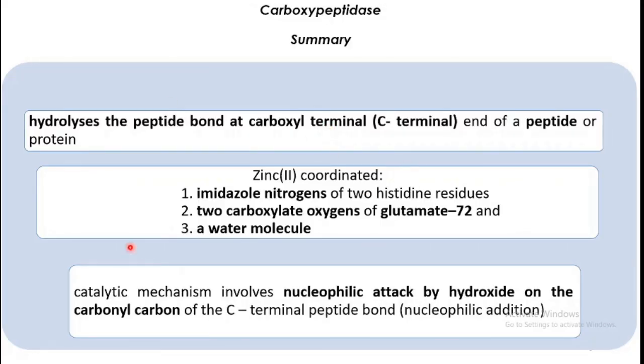To sum up, this enzyme carboxypeptidase is used for hydrolyzing the peptide bond at the carboxyl terminal end of a peptide or protein. The zinc present inside this enzyme is coordinated by imidazole nitrogens of two histidine residues, two carboxylate oxygens of glutamate 72, and a water molecule. Regarding the mechanism, it involves nucleophilic attack by hydroxide on the carbonyl carbon of the C-terminal peptide bond. Thank you.